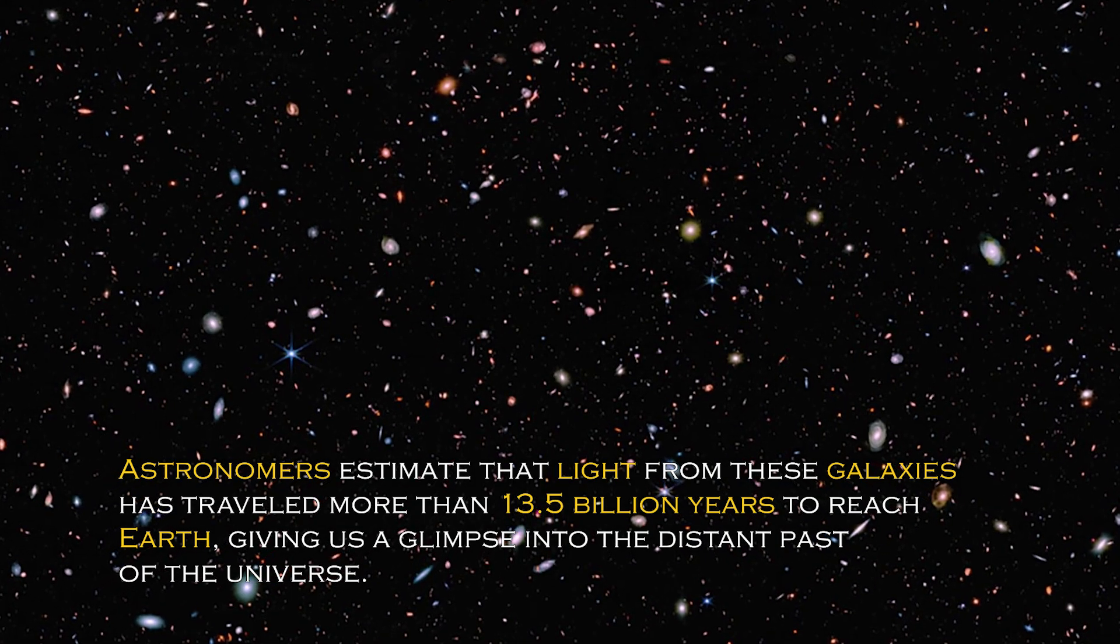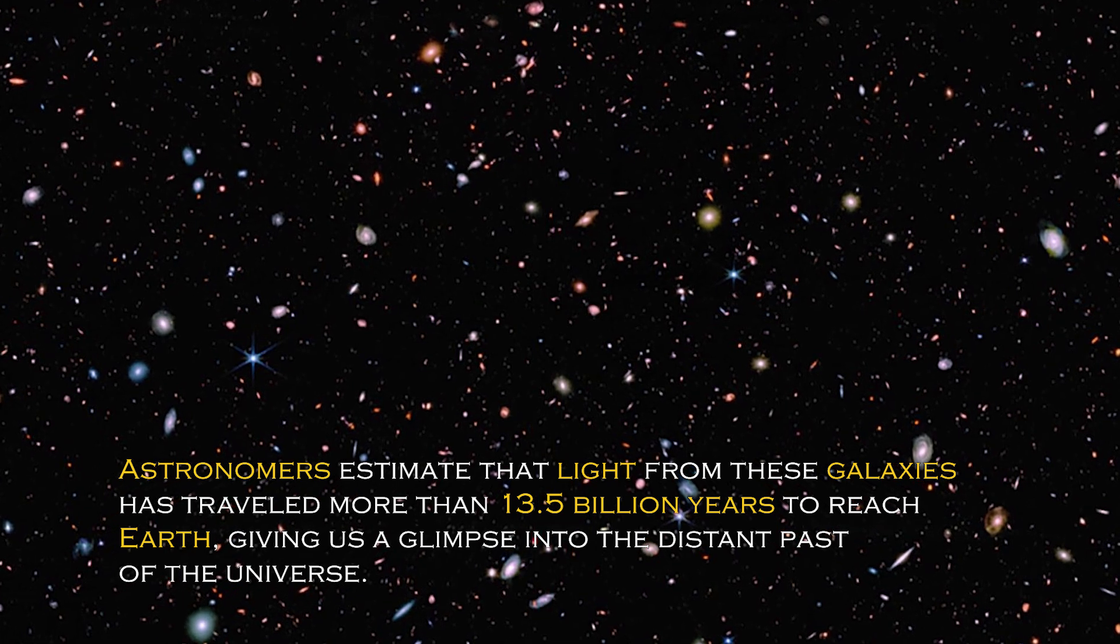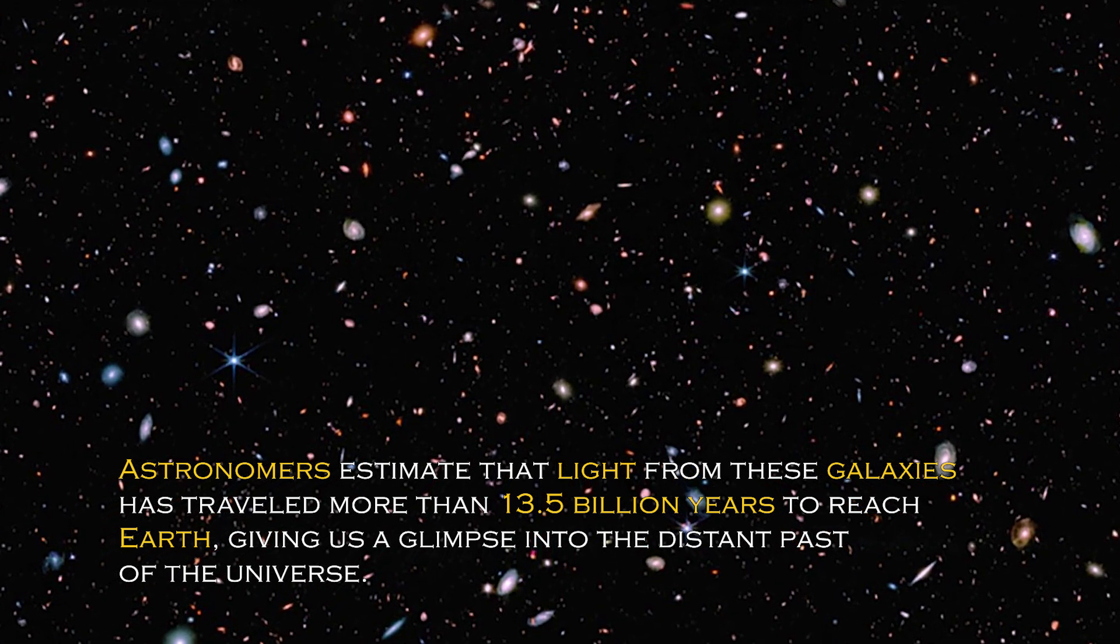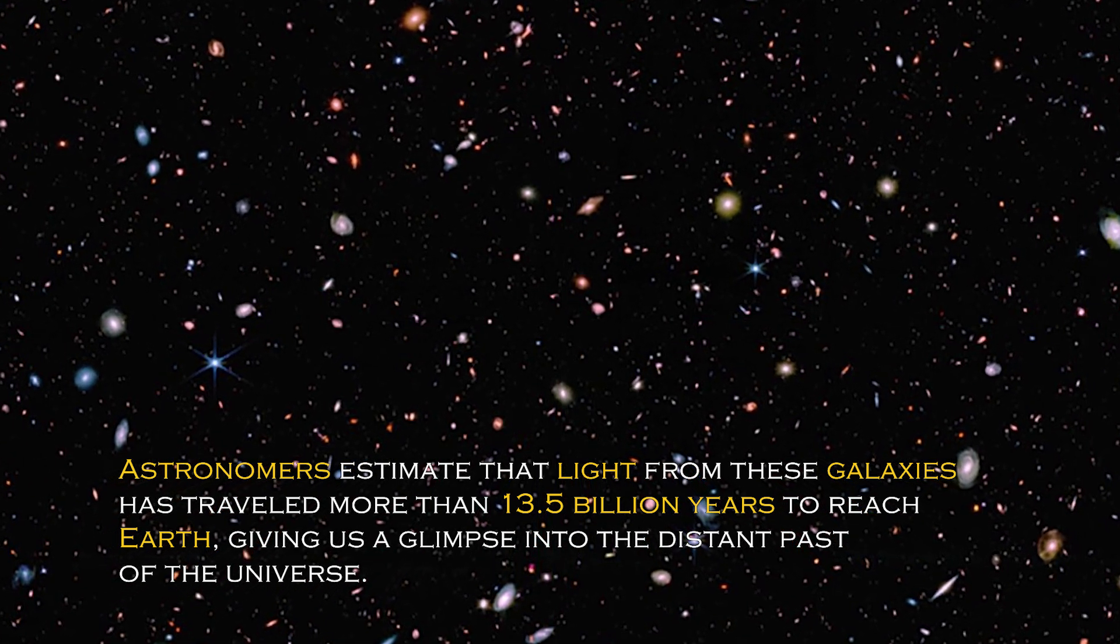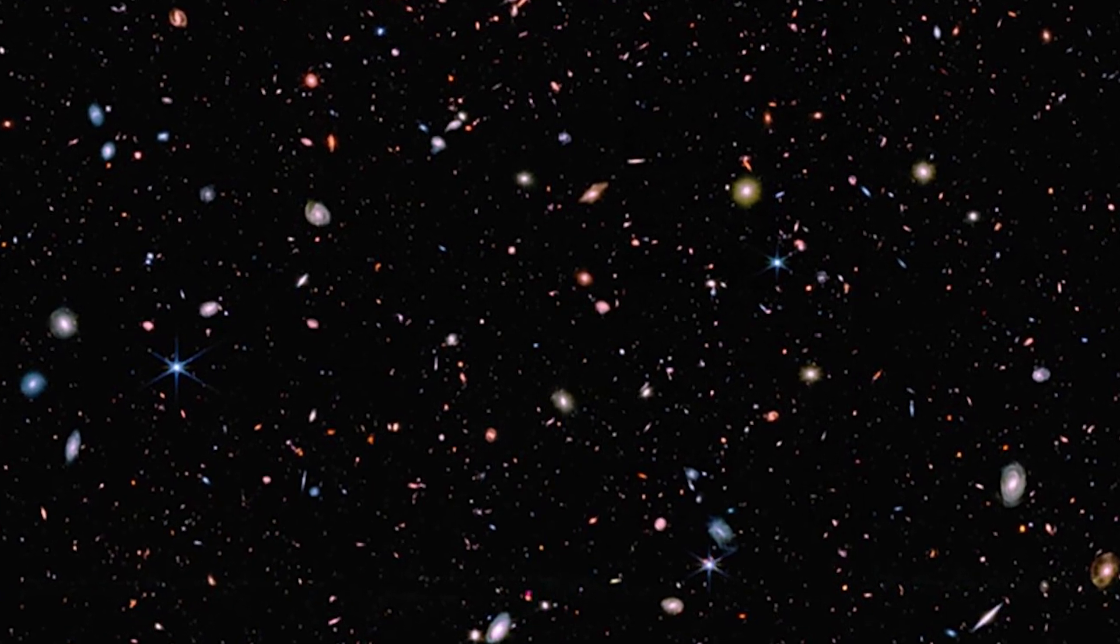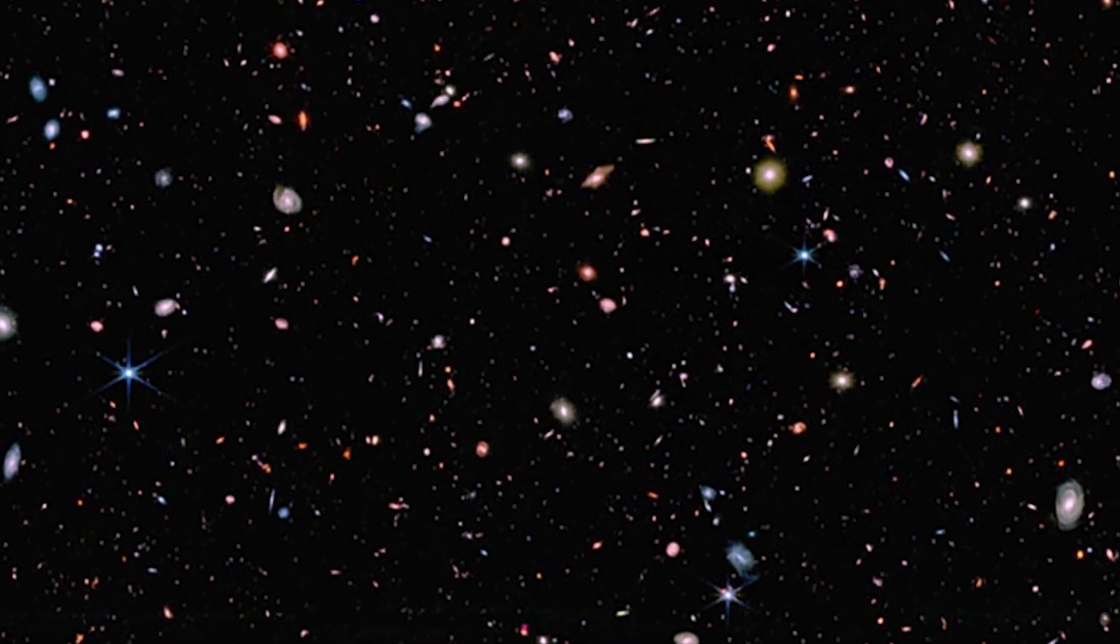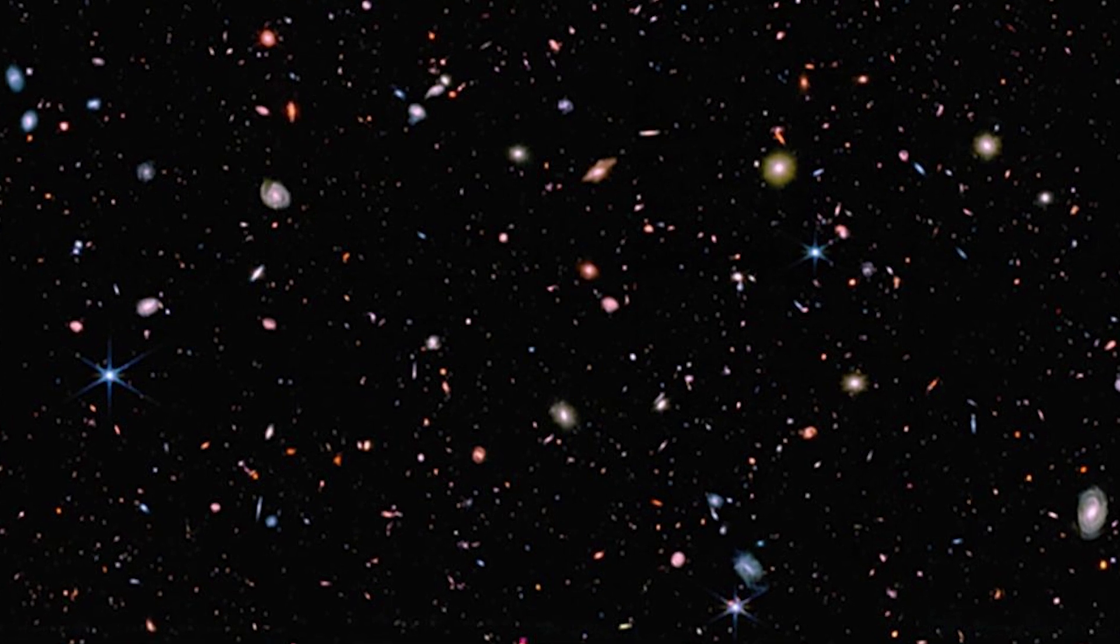Astronomers estimate that light from these galaxies has traveled more than 13.5 billion years to reach Earth, giving us a glimpse into the distant past of the universe. These galaxies were discovered when the universe was young, which sheds light on how quickly the first generations of galaxies emerged.